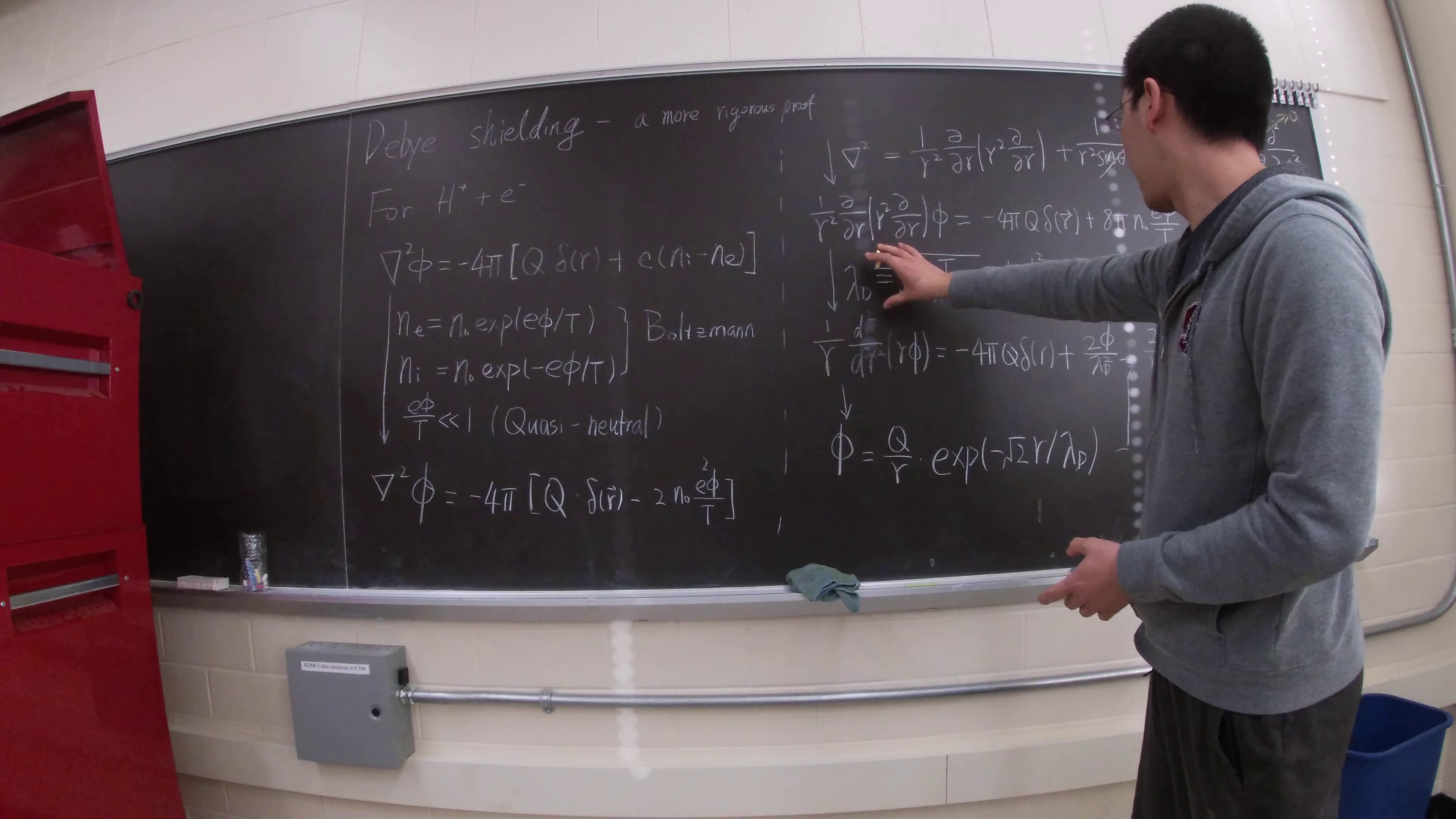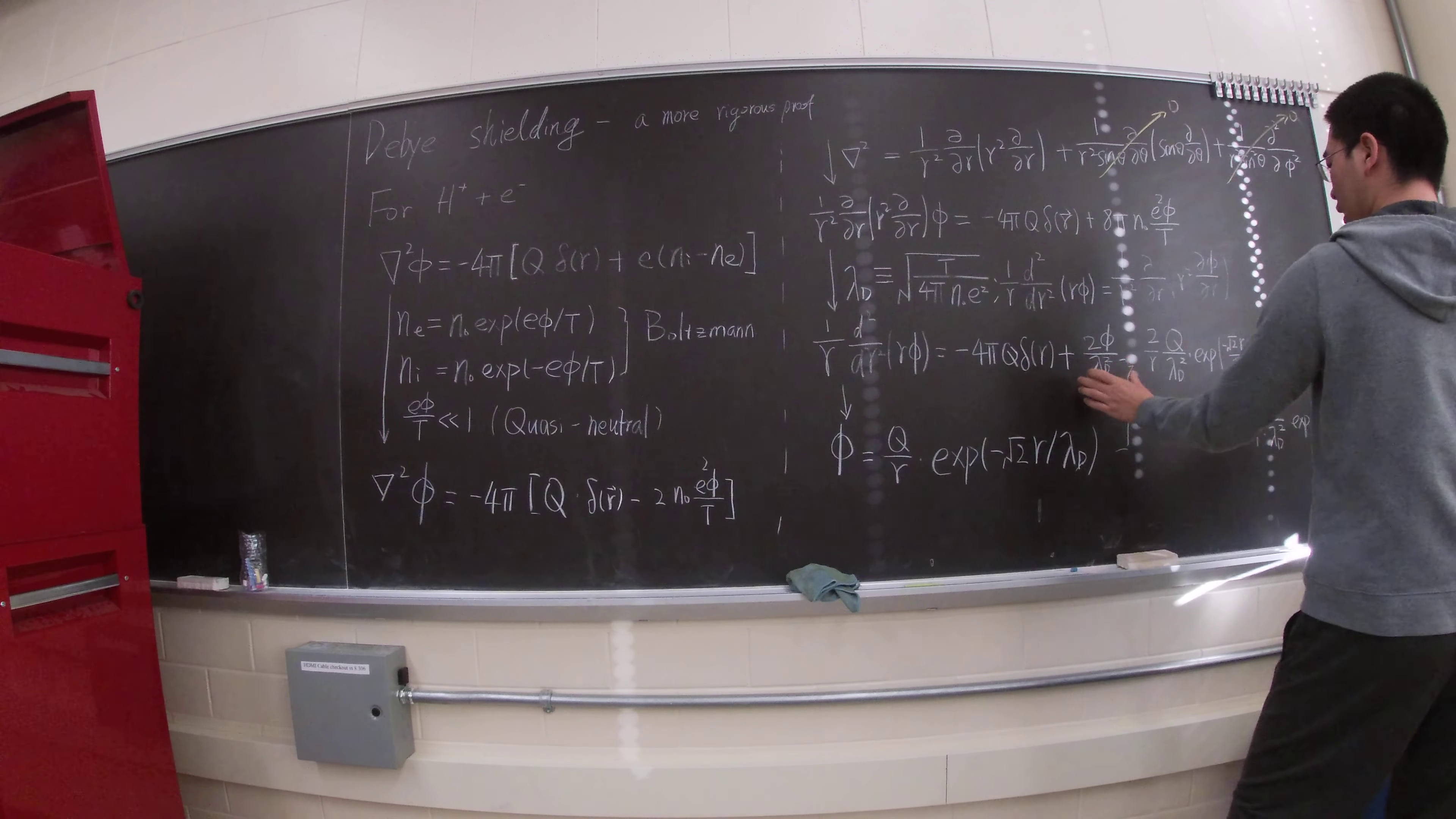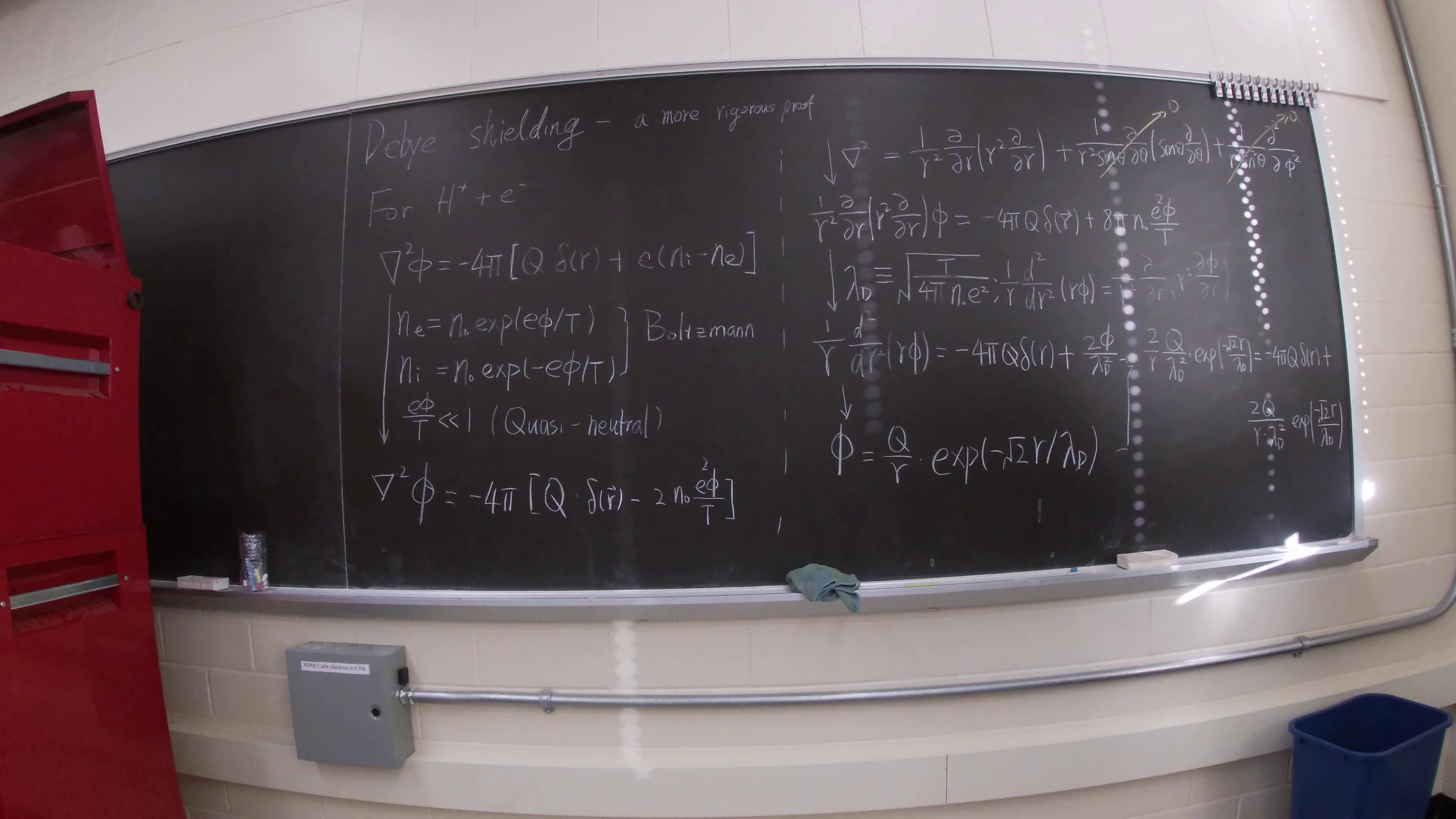So, we plug it back in, plug all these things in here. So, this becomes this. Here it is. And this doesn't change from here to here. And we define this like that. So, then this becomes 2 phi over lambda_d squared.